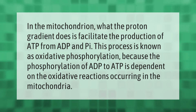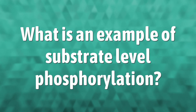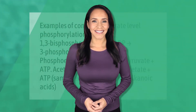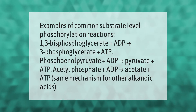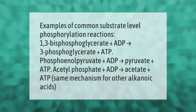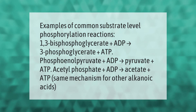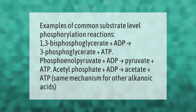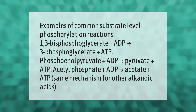Examples of common substrate level phosphorylation reactions: 1,3-bisphosphoglycerate + ADP → 3-phosphoglycerate + ATP. Phosphoenolpyruvate + ADP → pyruvate + ATP. Acetyl phosphate + ADP → acetate + ATP. The same mechanism applies for other alkenoic acids.